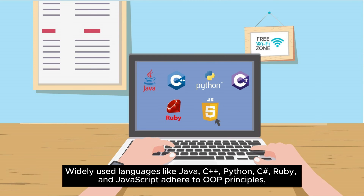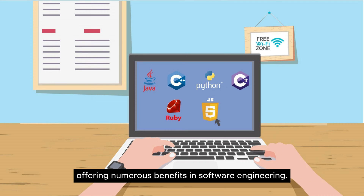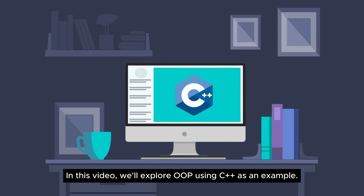Widely used languages like Java, C++, Python, C Sharp, Ruby, and JavaScript adhere to OOP principles, offering numerous benefits in software engineering. In this video, we'll explore OOP using C++ as an example.